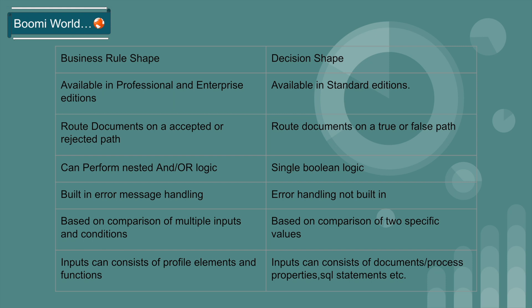By using Business Rule Shape we can perform nested AND/OR logics. By using Decision Shape we can perform only single boolean logic.